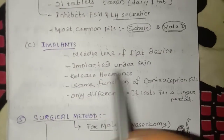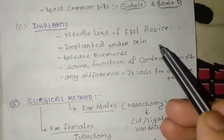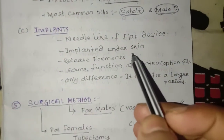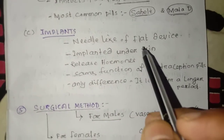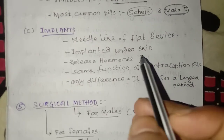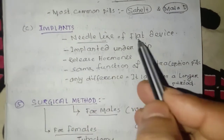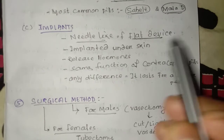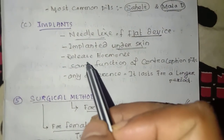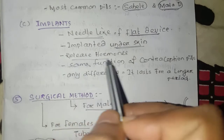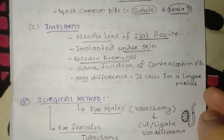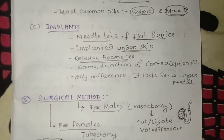This method is compared to the previous chemical method and pill use. This involves a small device — a flat implant device — which is inserted under the skin by a doctor in a minor surgical procedure. This device releases hormones such as estrogen at a controlled level.